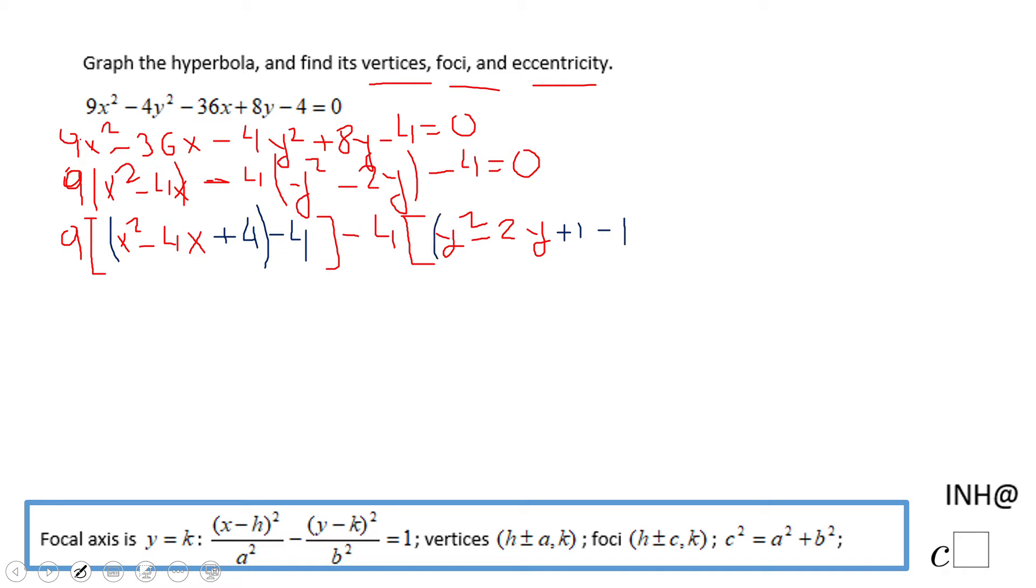This expression here is a perfect square. We created, we completed the square. Okay, so now we're going to write those squares, which is going to be (x - 2)² minus 4. The same for the second part, y² - 2y + 1 is (y - 1)² minus 1, minus 4, equals 0.